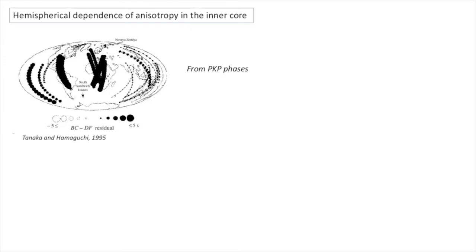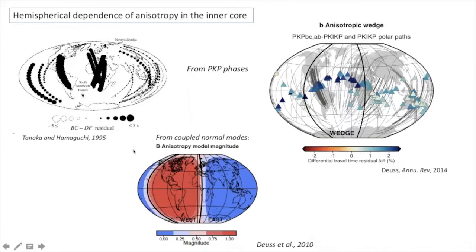At present, it appears that only a wedge, rather than an entire hemisphere, might be strongly anisotropic at shallow depths in the inner core. This wedge contains a highly anomalous path from the South Sandwich Islands to Alaska, whose origin is still a matter of debate.